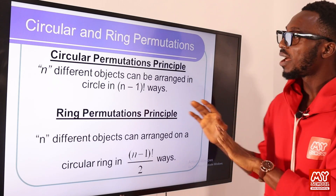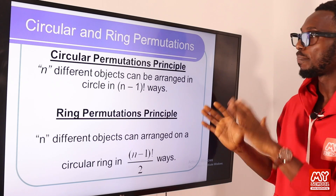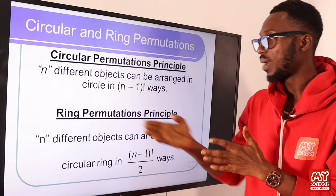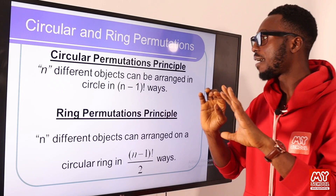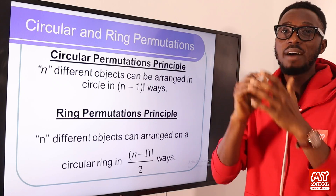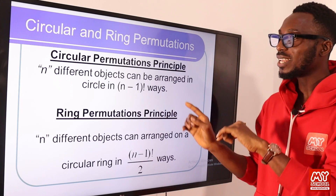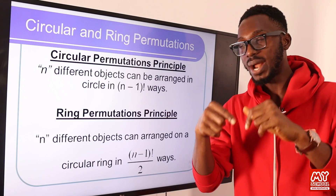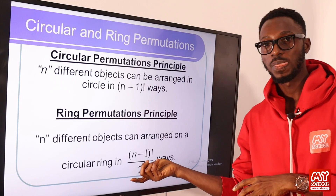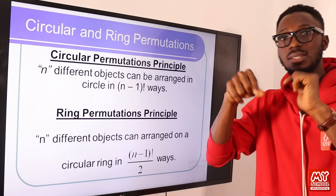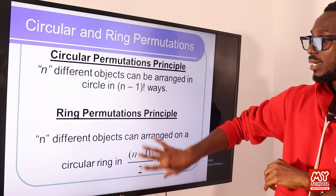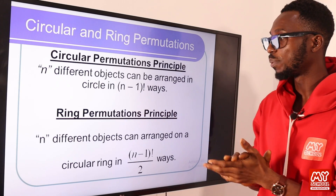We also have circular and ring permutation. For circular permutation, n different objects can be arranged in a circle in (n−1)! ways. For example, if I have six objects arranged in a circle, that is (6−1)! = 5! ways. For a ring arrangement — like beads on a bracelet — you divide the circular permutation formula by two, because the bracelet can be flipped (clockwise or anti-clockwise). So for ring permutation, the formula is (n−1)! divided by 2.